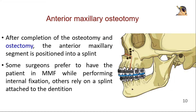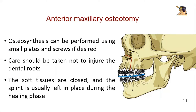After completion of the osteotomy and ostectomy, the anterior maxillary segment is positioned into a splint. Some surgeons prefer to have the patient in maxillomandibular fixation (MMF) while performing internal fixation; others rely on a splint attached to the dentition. Osteosynthesis can be performed using small plates and screws if desired. Care should be taken not to injure the dental roots. The soft tissues are closed and the splint is usually left in place during the healing phase.